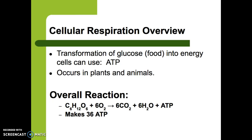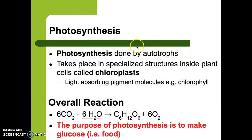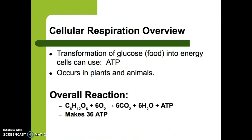Cellular respiration takes the food made by plants and converts it to energy in the form of ATP. This happens in both plants and animals. Remember, photosynthesis only happens in autotrophs, but once they make food, it has to be converted into energy — that's what all cells need. Here's the reaction for cellular respiration: one molecule of glucose plus six molecules of oxygen produces six molecules of carbon dioxide, six molecules of water, and energy.